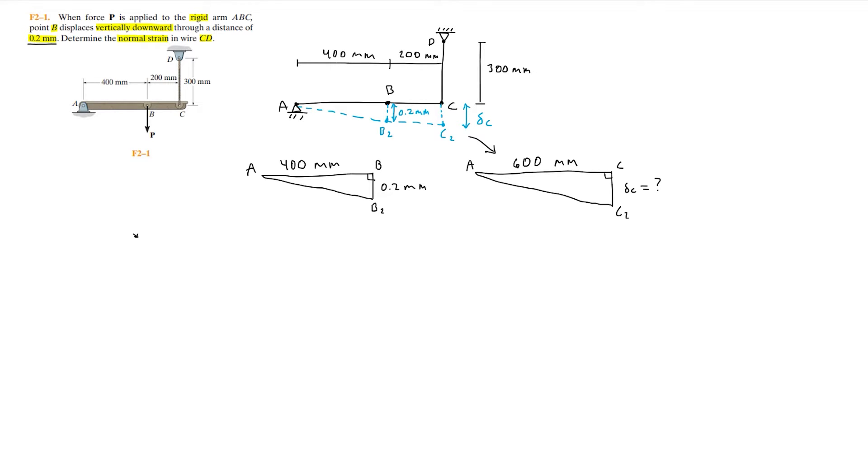If we have these two triangles, how can we compare them in order to find delta C? We can use proportions. For the bigger triangle we can have the ratio delta C over 600 millimeters which is adjacent to delta C, and that'll be equal to the ratio of the smaller triangle where we have 0.2 millimeters over 400 millimeters.